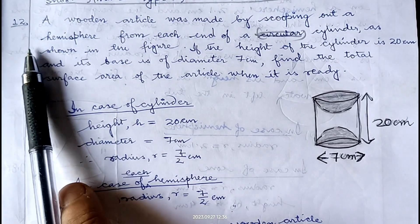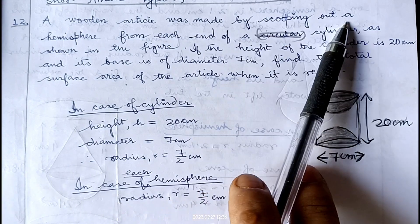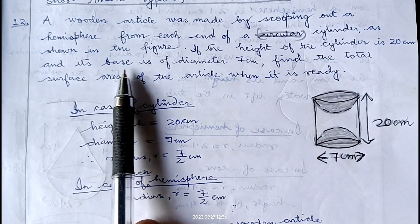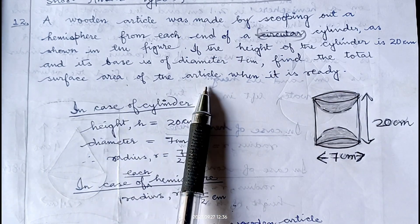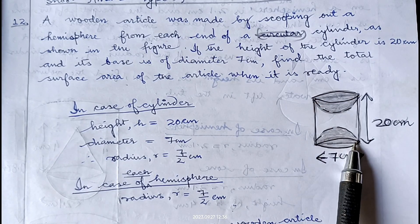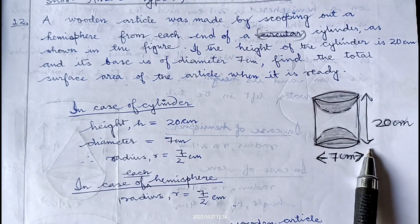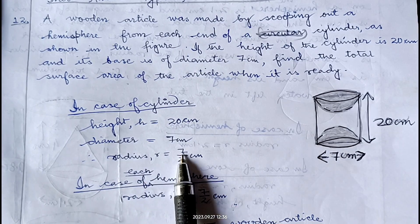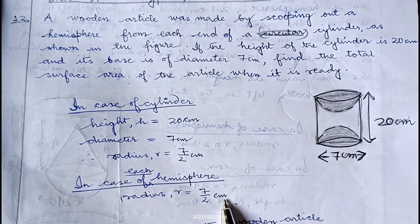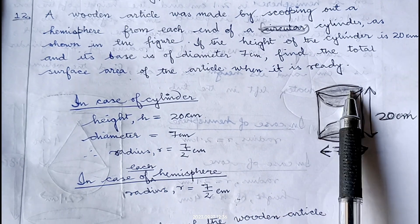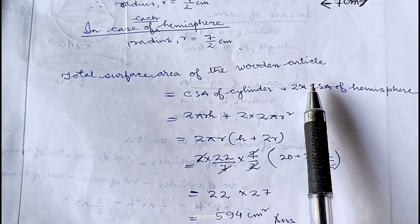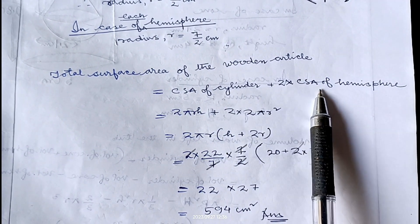In question number 12, a wooden article was made by scooping out a hemisphere from each end of a cylinder. If the height of the cylinder is 20 centimeter and its base diameter is 7 centimeter, find the total surface area of the article. The cylinder has height 20 and radius 7 by 2. The hemispherical part also has radius 7 by 2. Total surface area equals curved surface of cylinder plus 2 into curved surface of each hemisphere.